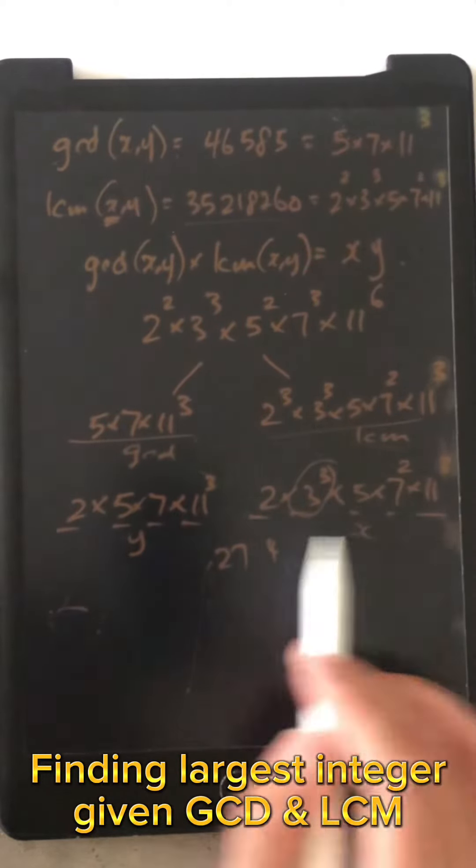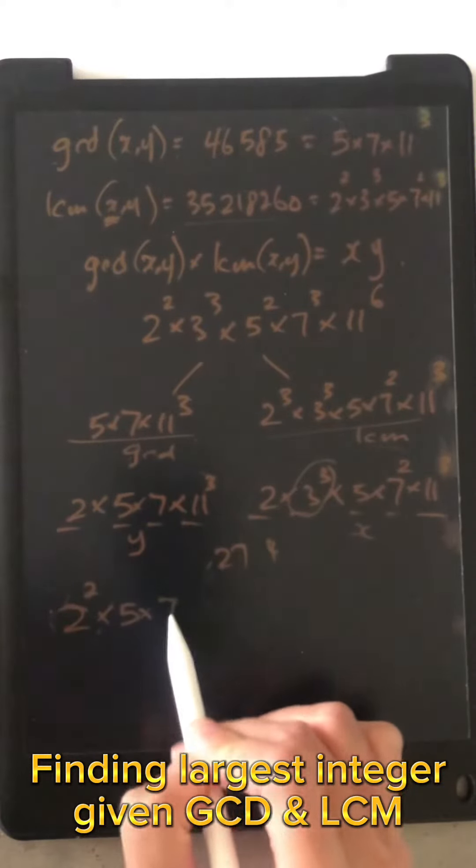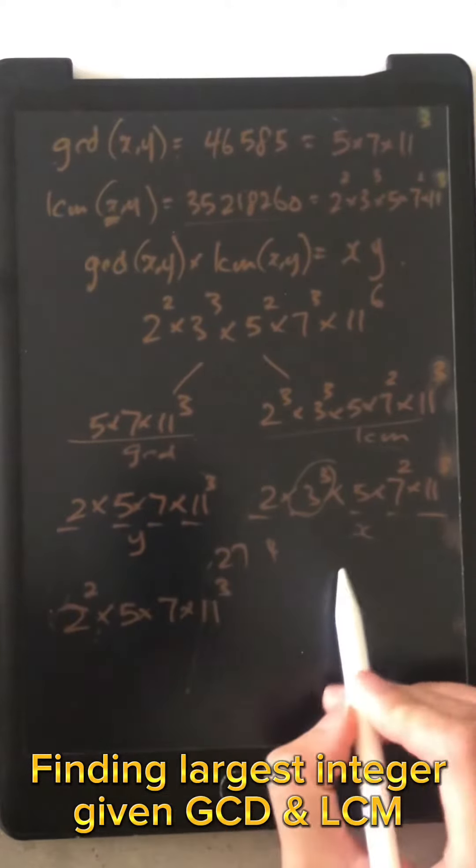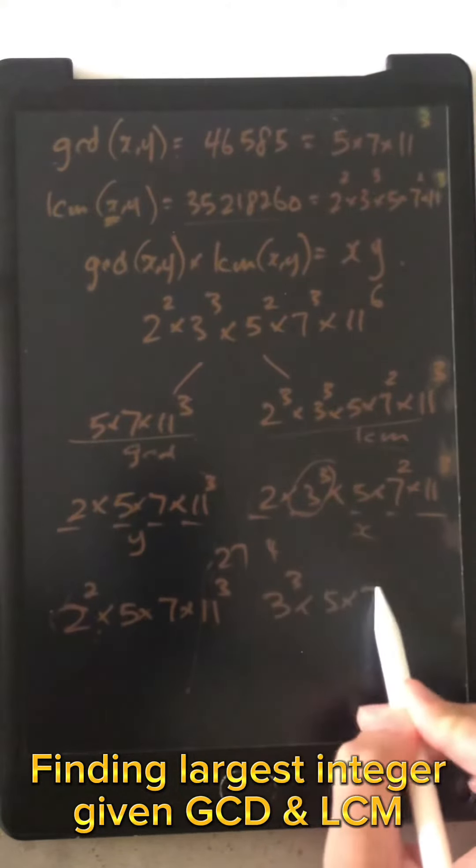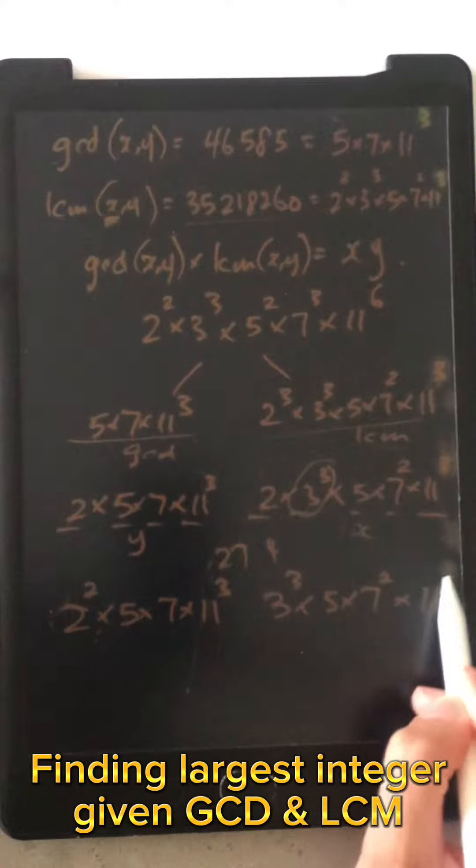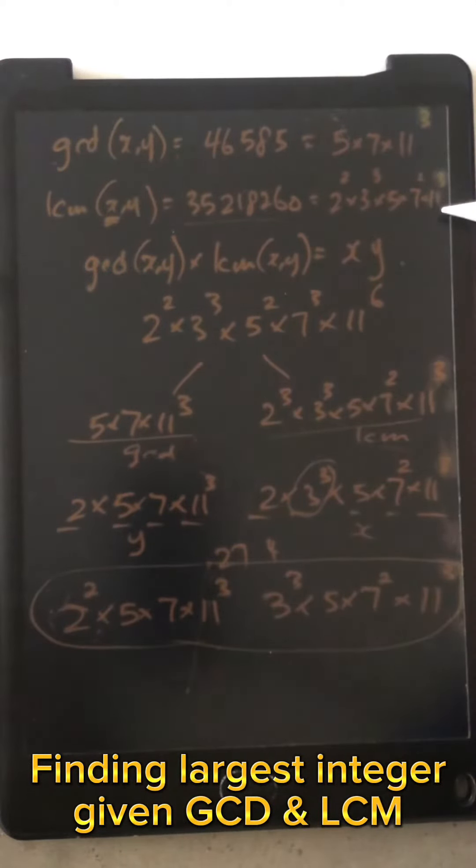there's no 4 here. So I do 2 squared times 5 times 7 times 11 cubed. And then that will be 3 cubed times 5 times 7 squared times 11 cubed. Therefore these two will give you the above GCD and LCM.